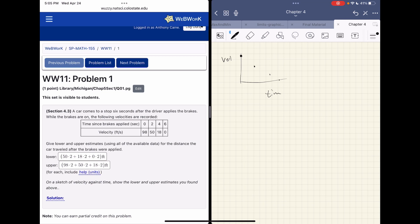So to get an upper bound on how far we go, I'm going to pretend that I was traveling 98 feet per second for the entire two seconds. And so in those two seconds, I travel 2 times 98 feet per second, so that's 196. Then I'm going to assume that I go 50 for the next two, so plus 2 times 50. And then I'm going to assume that I go 18 for the next two, and that would actually eat up the whole first six seconds.